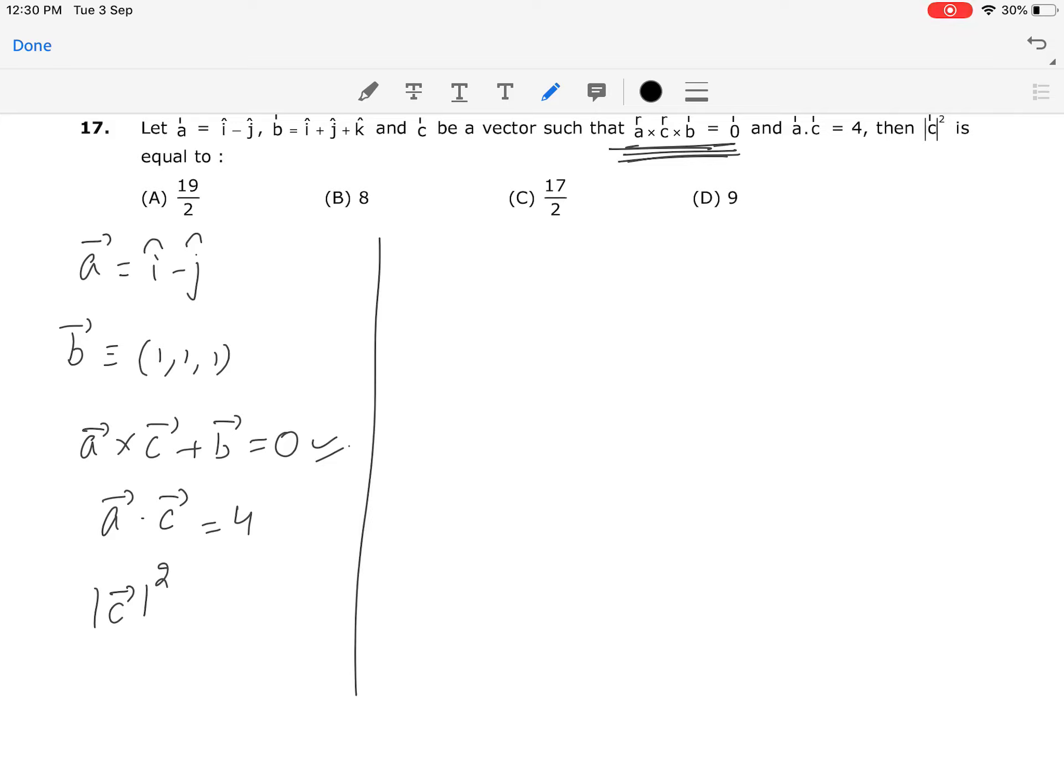What we can do here is pre-multiply both sides with a vector cross. So a vector cross of a vector cross c vector plus b vector equals 0 vector, because if we cross with 0 vector, it remains 0.